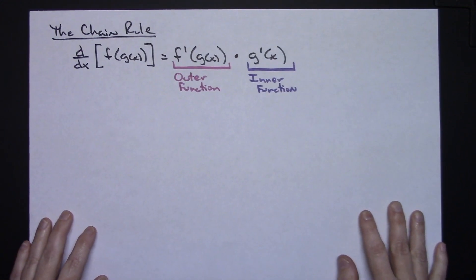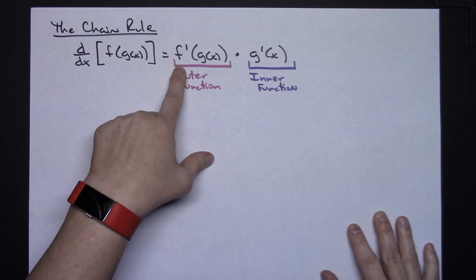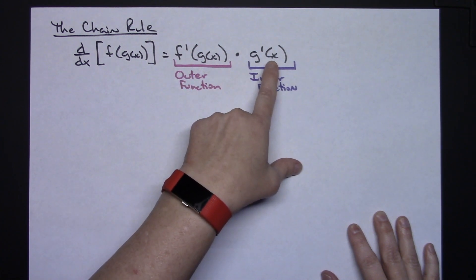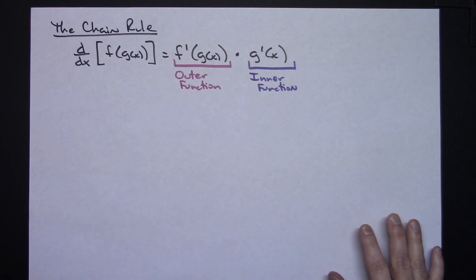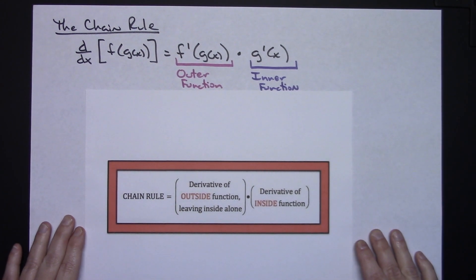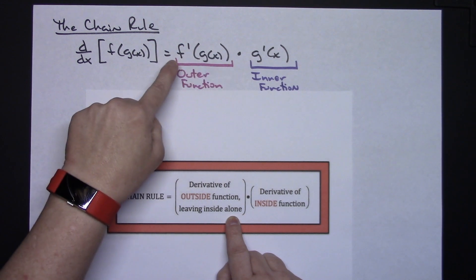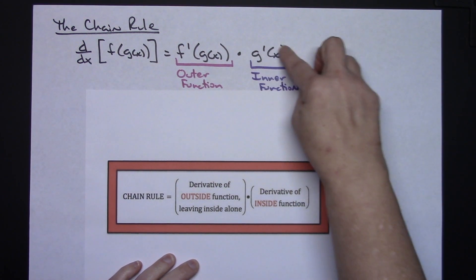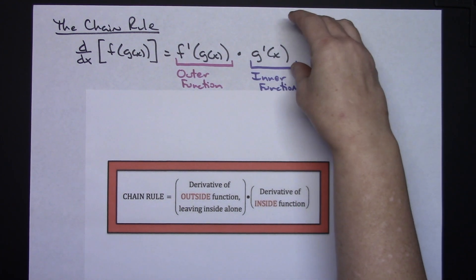Let's take a look at what the rule looks like written out. The derivative of f of g of x — a composite function — is the derivative of f with g of x on the inside, multiplied by the derivative of the inner function g. Notice that g of x is left alone inside. In words: the chain rule is the derivative of the outer function, leaving the inside alone, multiplied by the derivative of the inside function. This is just a nice way to translate the formula into words.